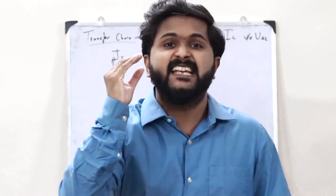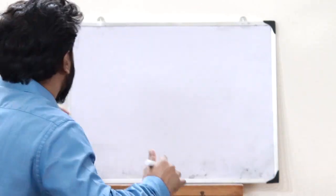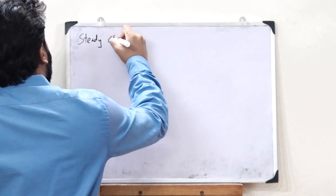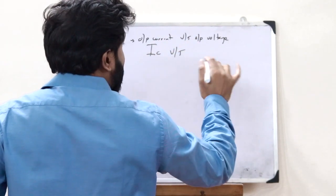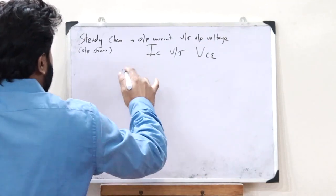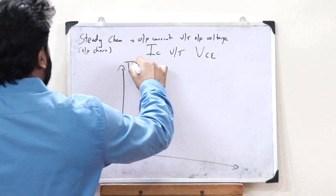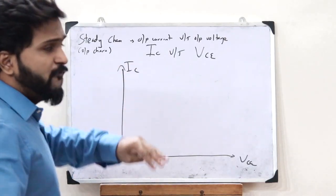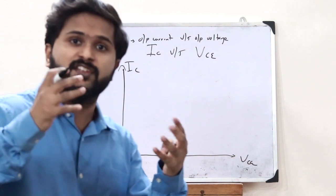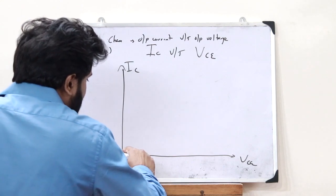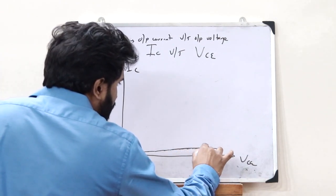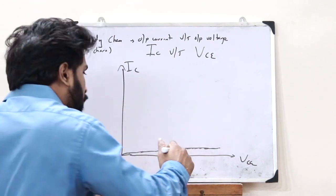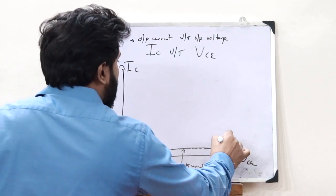Now let us see the output or steady-state characteristics of the IGBT, plotted between output current IC on the y-axis and output voltage VCE on the x-axis, with VGE kept constant. In the first scenario where VGE equals 0: as VCE increases, no significant current flows — only a small minority current due to minority charge carriers — and after a particular value, saturation is obtained.